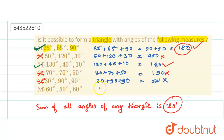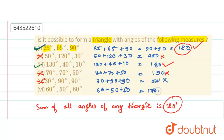The sixth case: 60 plus 60 plus 60. 60 plus 60 is 120, and 120 plus 50 is 170. We want 180, so again it is not possible to form a triangle.